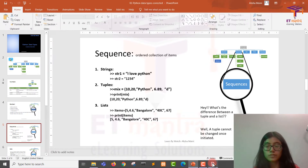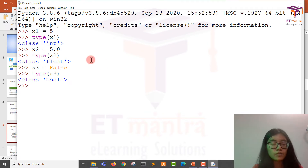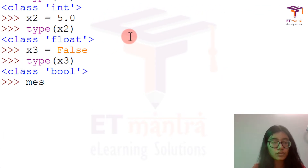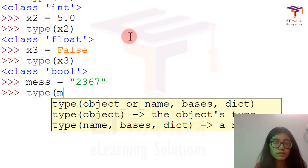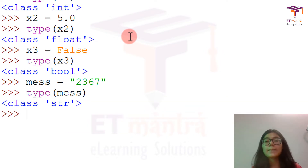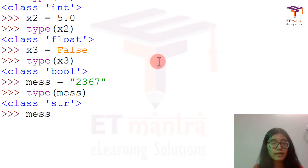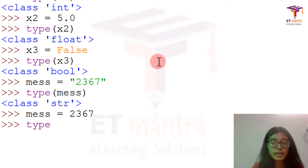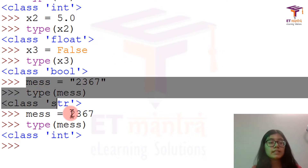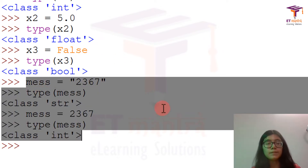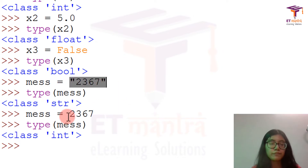Let's go back to Python and give a variable mess equal to '2367' in quotes and enter. When I check the type of mess, the type is string. But if I give mess equal to 2367 without the quote and check the type, it would be int. Both these examples clearly show the difference between the two.